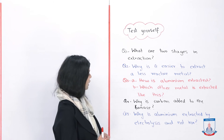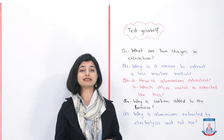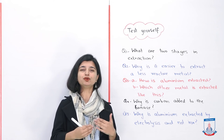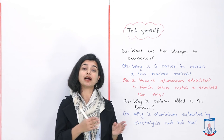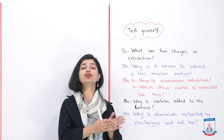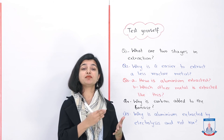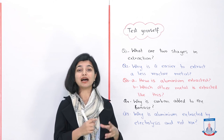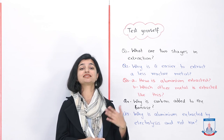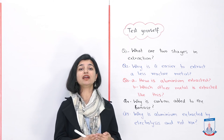Question 4: Why is carbon added to the blast furnace in the extraction of iron? The answer is that carbon reacts with the oxygen present in the iron oxide. Carbon is added to react with the oxygen so that oxygen can be removed from the iron oxide, leaving behind pure iron.